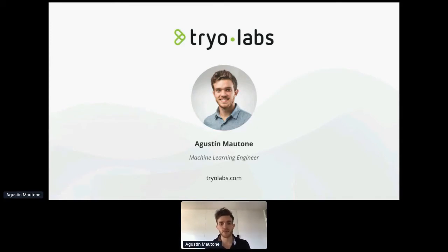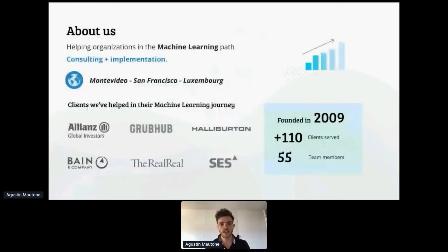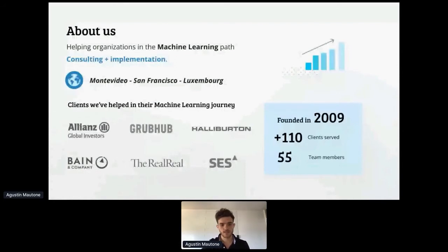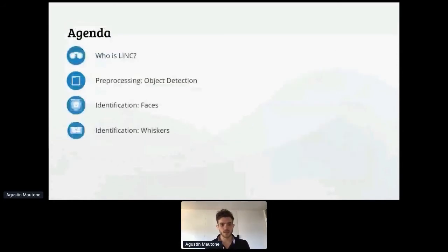I've worked on all sorts of projects ranging from pose detection to lion identification, which I'll be speaking about today. Trial Labs is a machine learning consultancy company that partners with companies to bring business value and help them through all the phases of machine learning development — from the very inception in R&D to putting those systems into production.